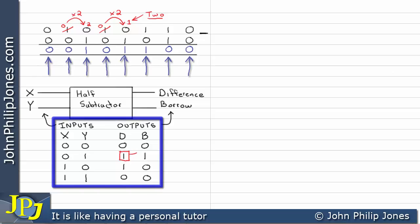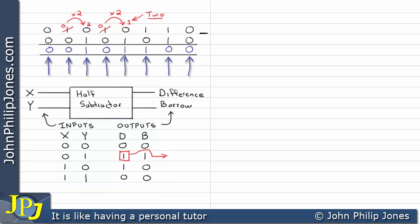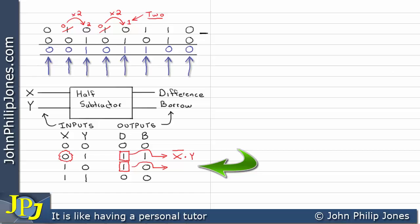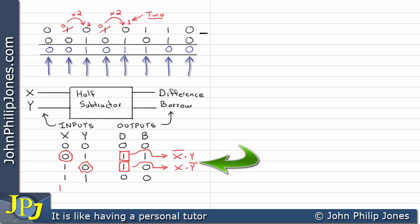This truth table is now used to produce the sum of minterms. We look at when the output d is 1: the first case gives us not-x AND y (since x is 0), and the second case gives us x AND not-y (since y is 0). Consequently, the output d — the difference — is expressed as: (not-x AND y) OR (x AND not-y).